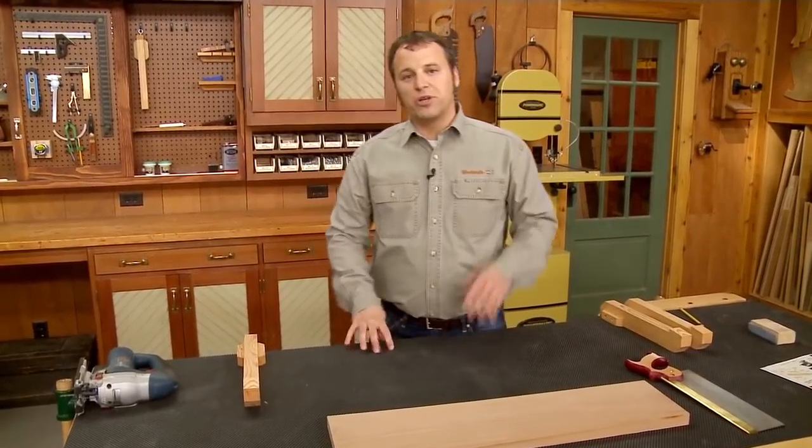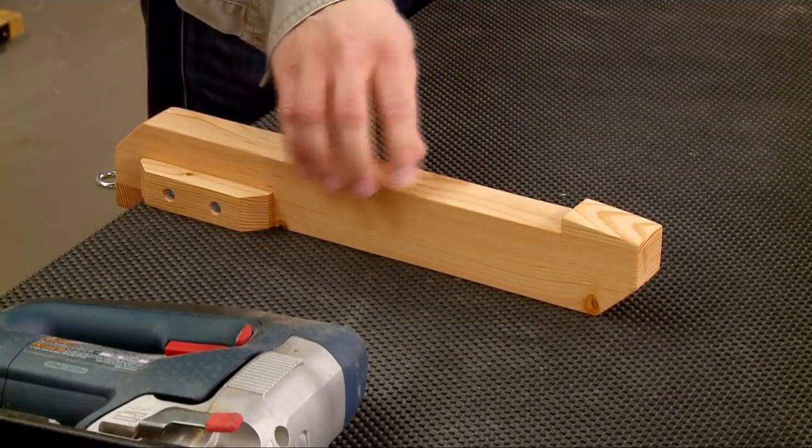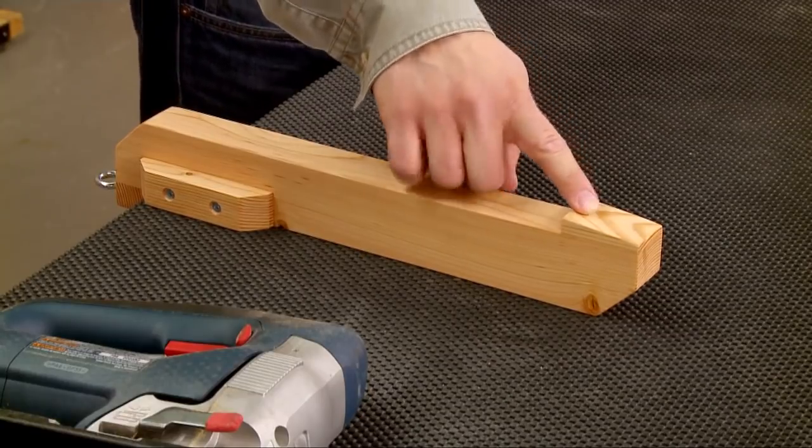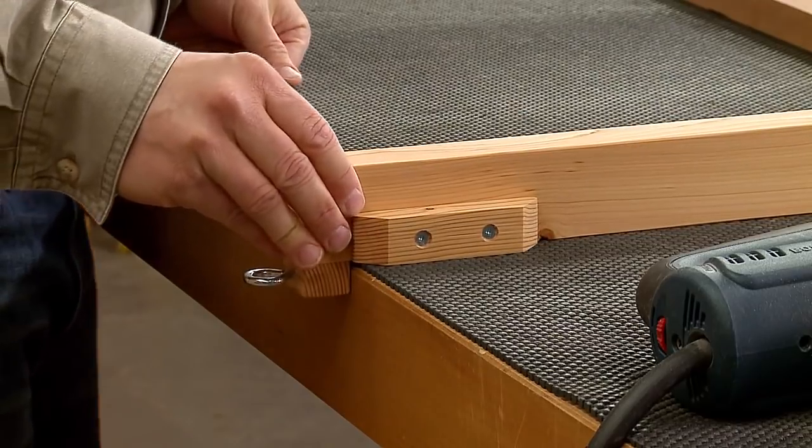Now the bench hooks are pretty simple to make. It consists of a body that's made from some two by stock. There's a stop at the end of it, and on the other end there's a heel, and that heel catches along the edge of the workbench.